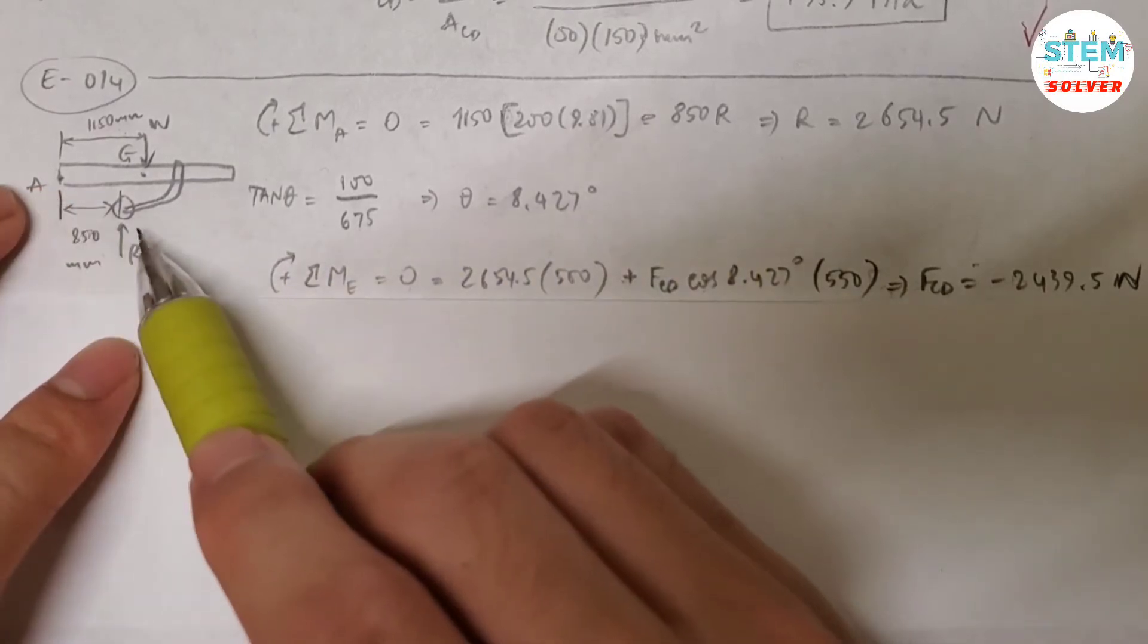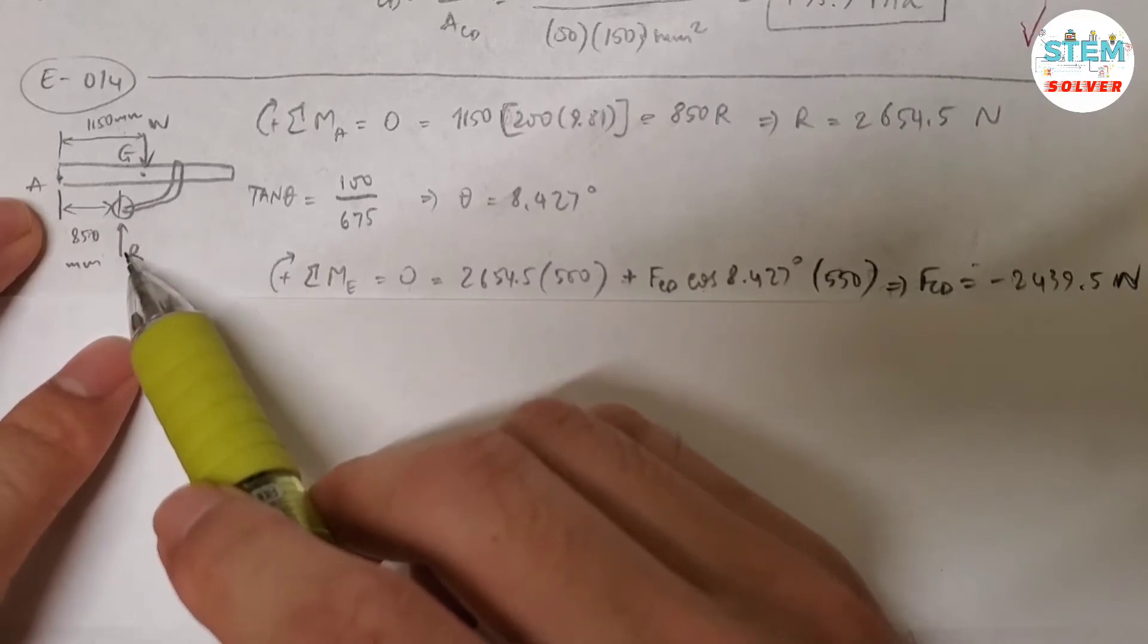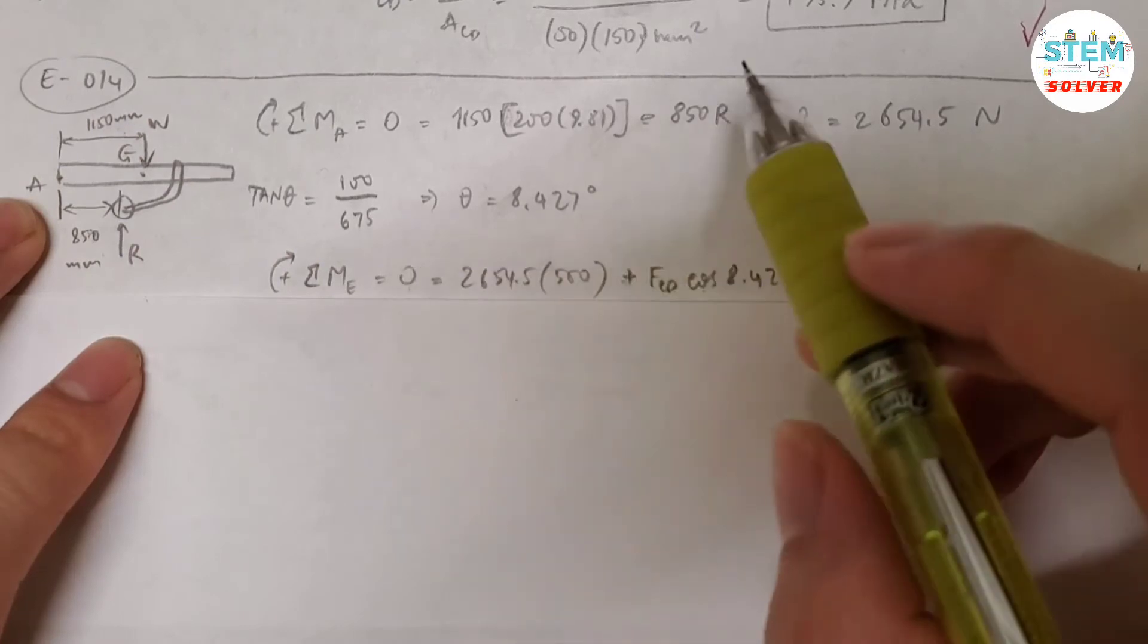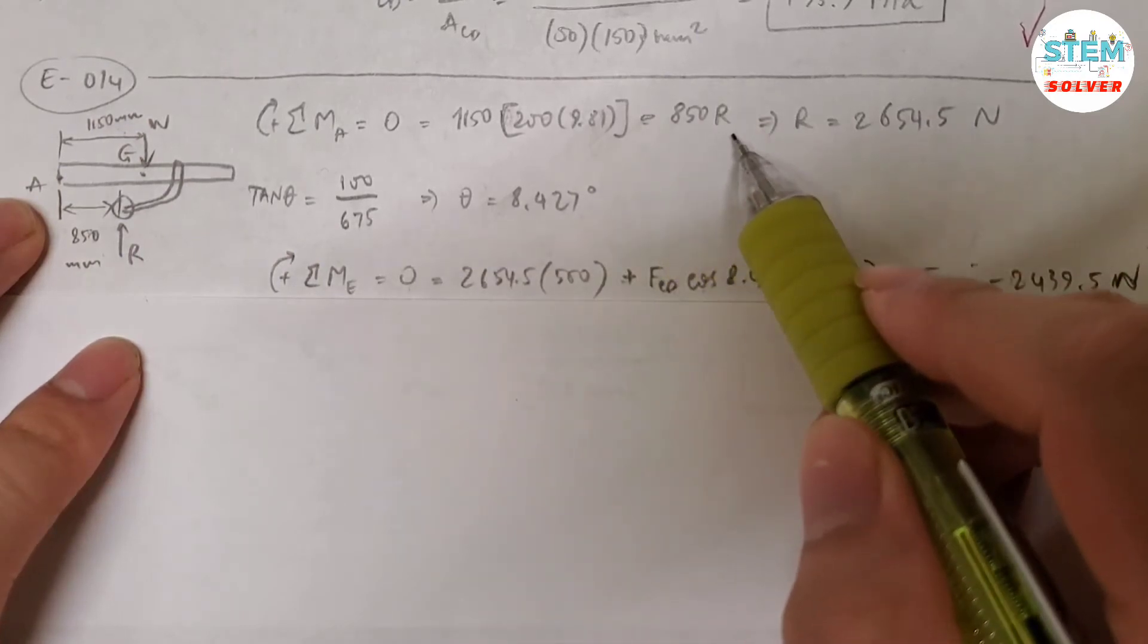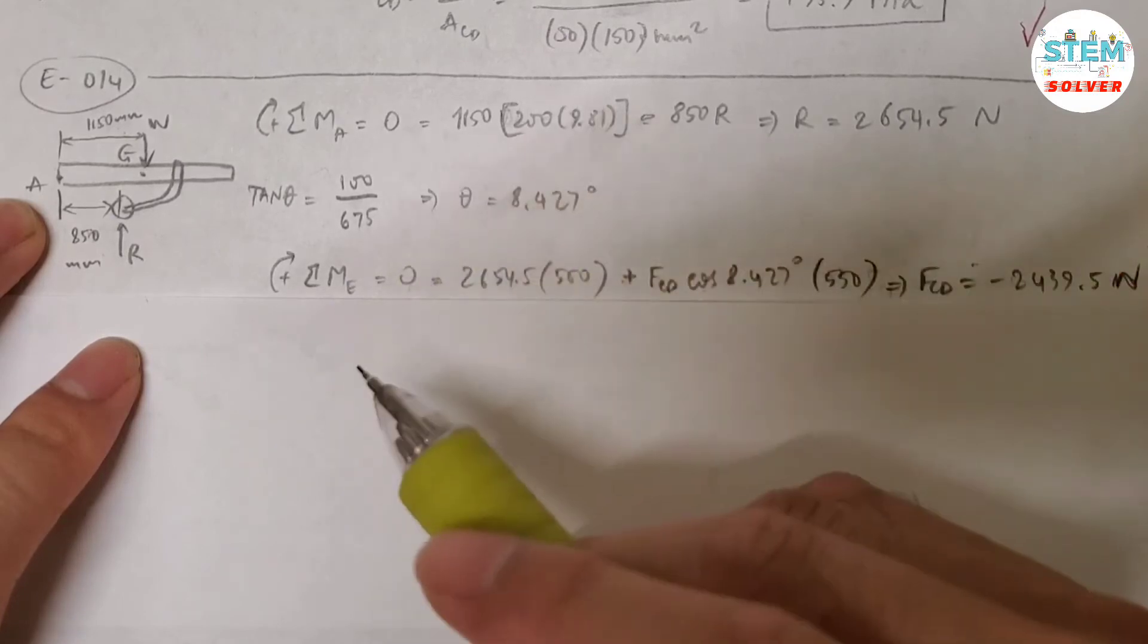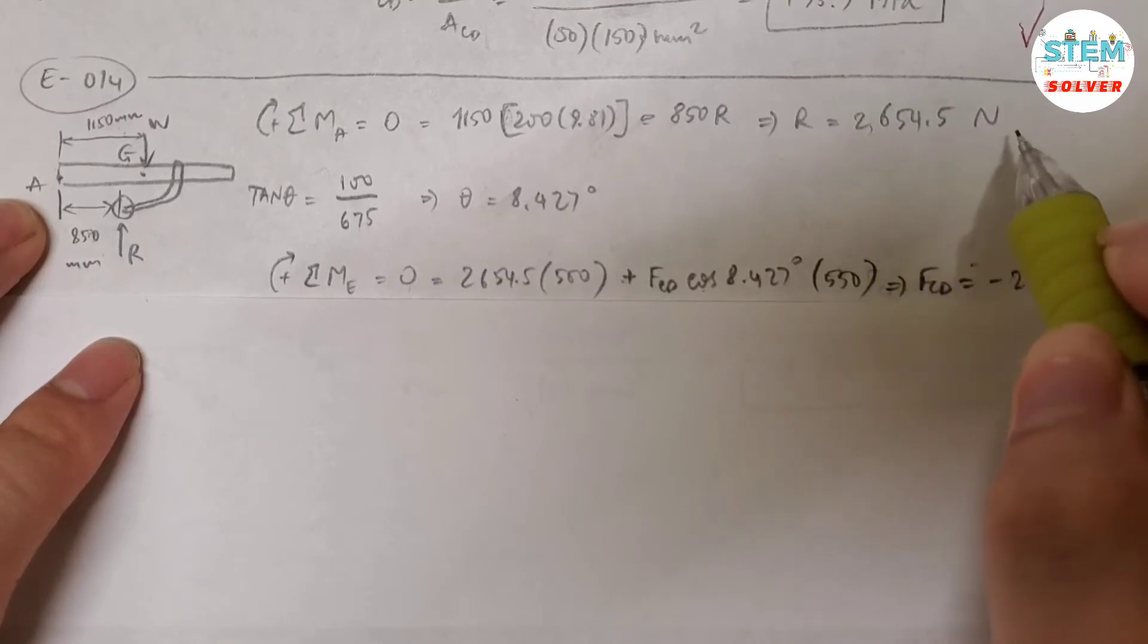Minus 850 times R. So the distance from here to the wheel is 850 mm. And this is upward force as I assumed, so negative, because it's counterclockwise. So I have negative 850 times R. Then set this expression equal 0 because it's in equilibrium. Then solve for R. I got 2654.5 N.